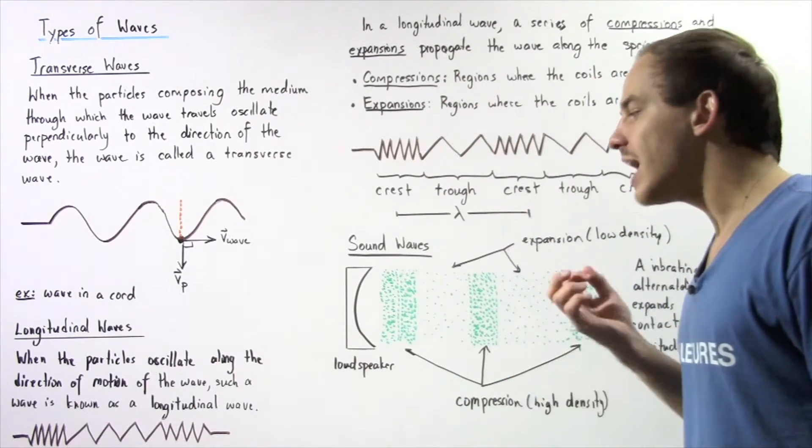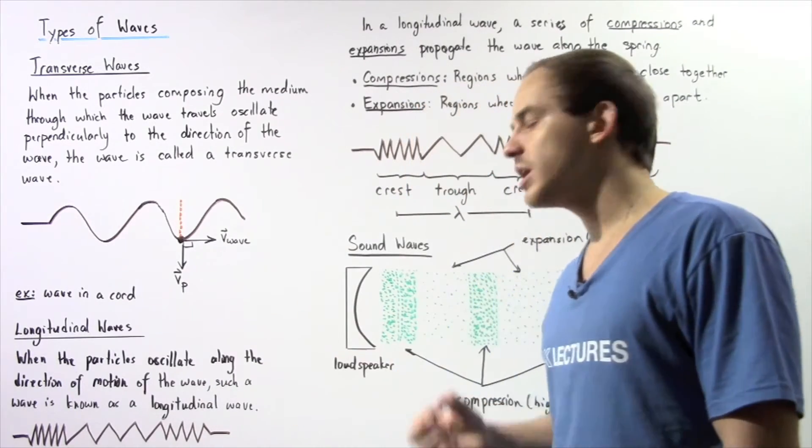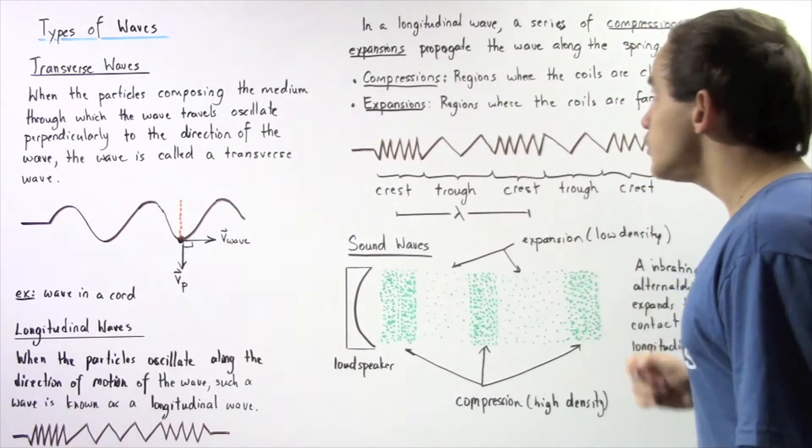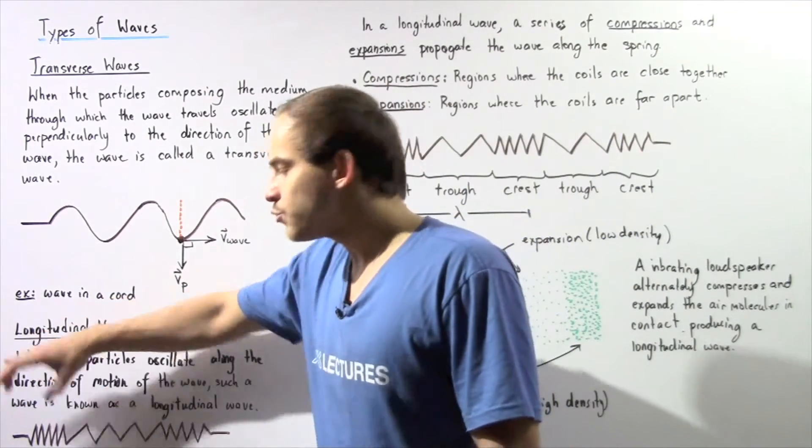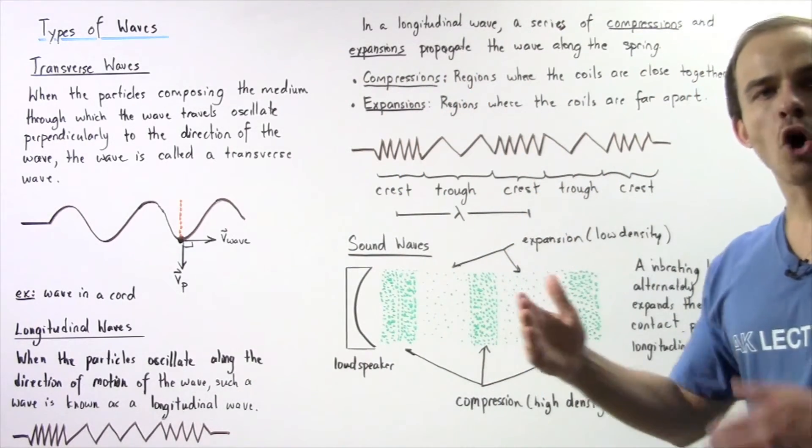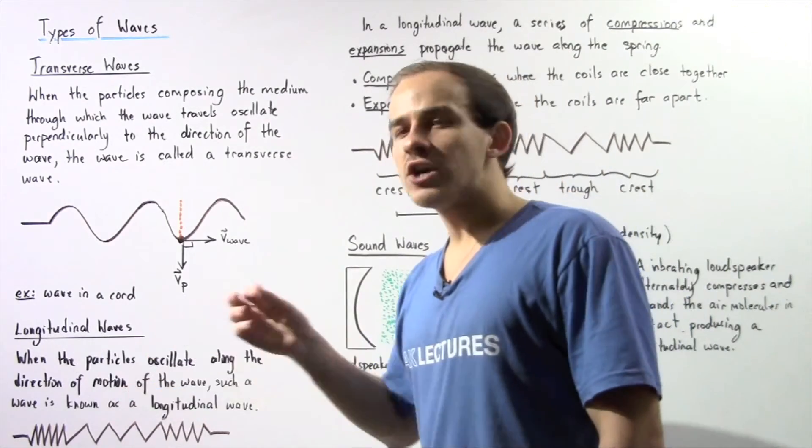One example of a longitudinal wave is the compression and stretching of a coiled spring. So in a longitudinal wave, a series of compressions and expansions propagate the wave along our spring. The compression regions are simply defined as regions where the coils are close together.